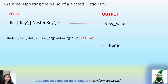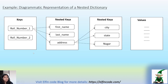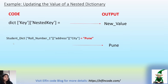The problem statement is to update the city of the role number one student. We can see that city is currently 'Mumbai' and we want to update it to 'Pune'.